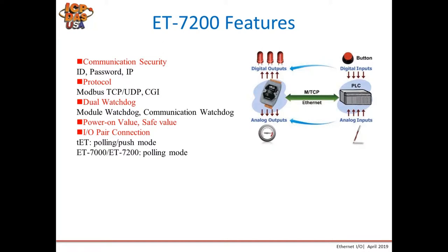Here are additional features of the ET-7200. There is ID, password, and IP address configuration for communication and security. Supported protocols are Modbus TCP, UDP, and CGI. There's a dual watchdog feature for communication and IO status. There's also a power-on value — you define the IO state when the module is powered on to avoid unwanted outputs like an open valve. And there's a safe value, so if communication is lost for too long, the module goes to a predefined safe state.